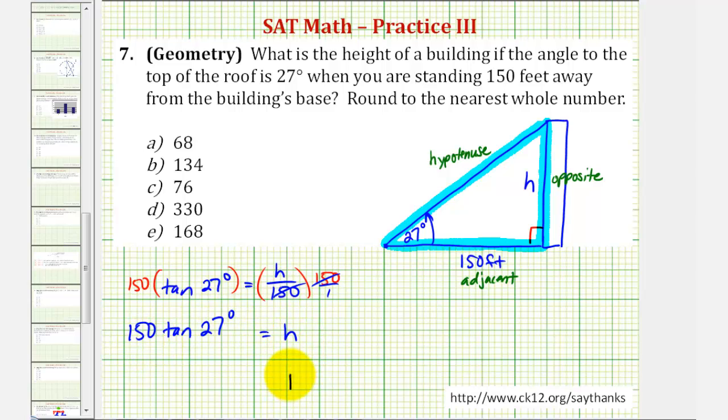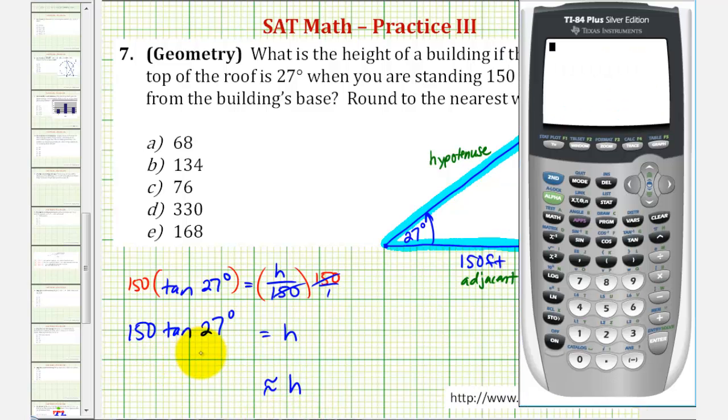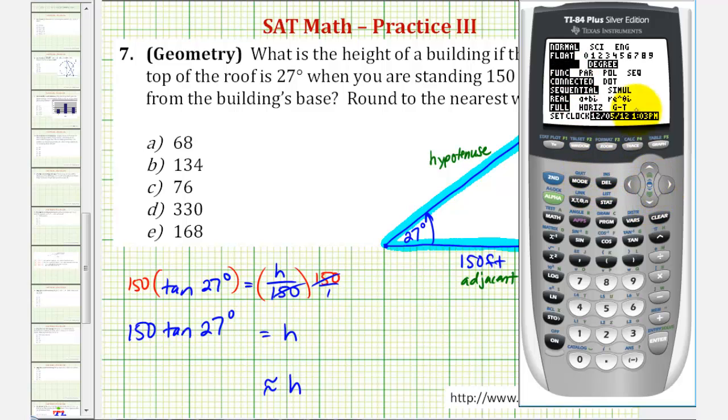So now we'll go to the calculator to approximate h to the nearest foot. It's important that we make sure that we are in degree mode, so let's press the mode key. Notice how in the third row, degree is highlighted. If it wasn't, we would highlight it and press enter. Now we'll go back to the home screen by pressing second mode for quit, and we'll type in 150 tangent 27 degrees. Going to the nearest whole number, the four in the tenths place tells us to round down, and therefore h is approximately 76 feet.